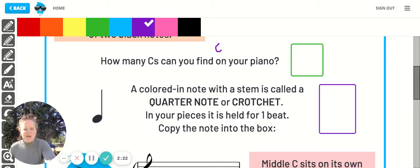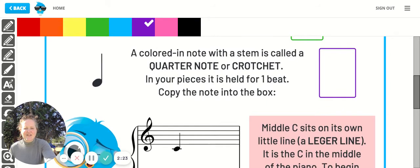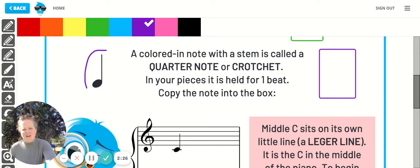Then next, we're looking at a colored in note with a stem. So that's this one over here. I'm circling it in purple. And it's called a quarter note. Here in North America, we usually go by quarter note. But in the UK, it can also be called a crotchet. So in your pieces, it's held for one beat. So a quarter note would just be one.